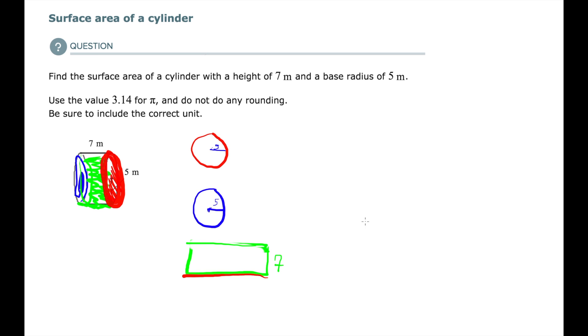And what do we call the measurement around a circle? We call that circumference. That is what we call circumference. C-I-R-C-U-M-F-E-R-E-N-C-E. And that is the width of my rectangle, the circumference, because it goes around the circle.